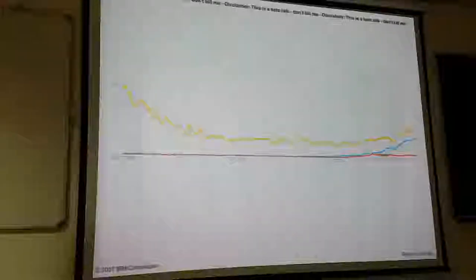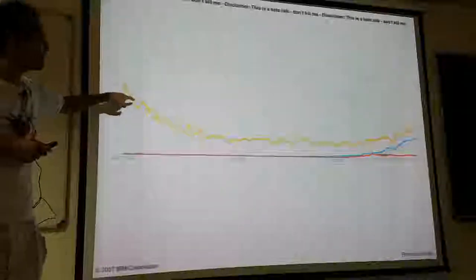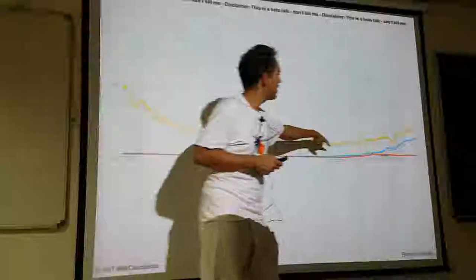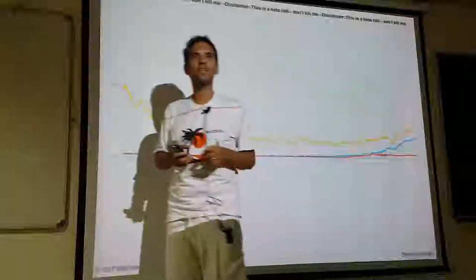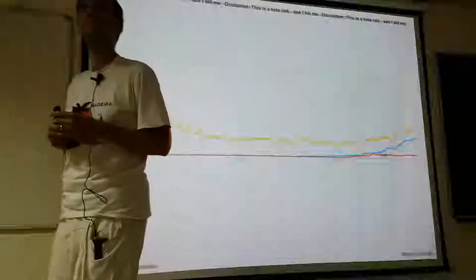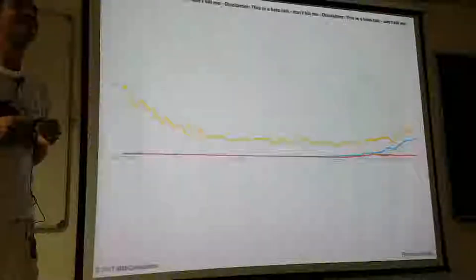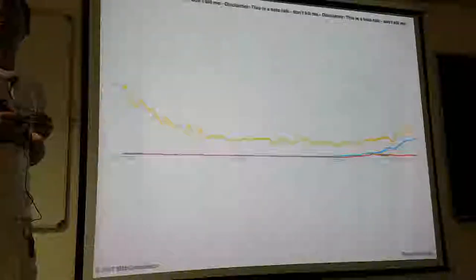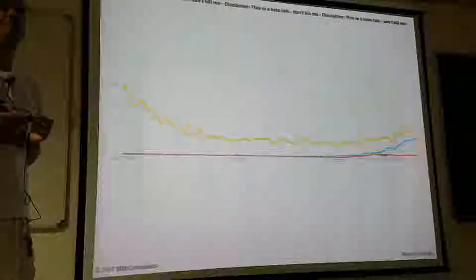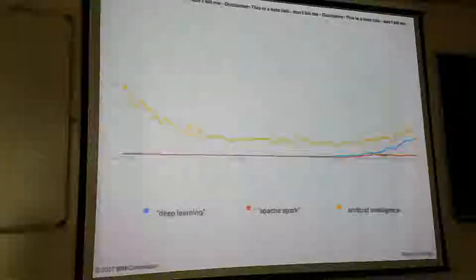There's a yellow line that is even more than Deep Learning — it had a real high spike, was flattening out, and was getting a second wind along with Deep Learning. It's a hype turbo at the moment — it's artificial intelligence.